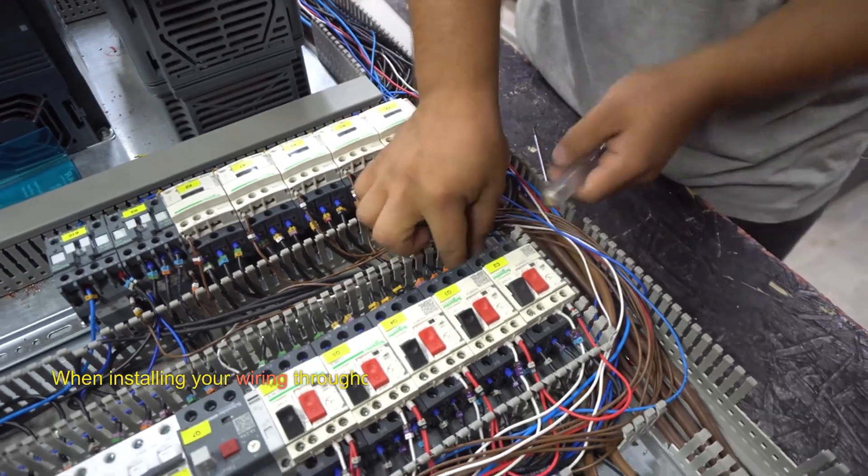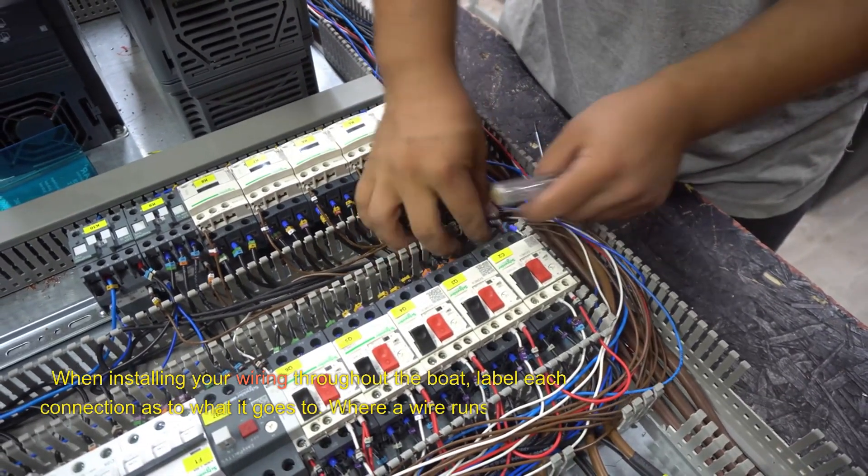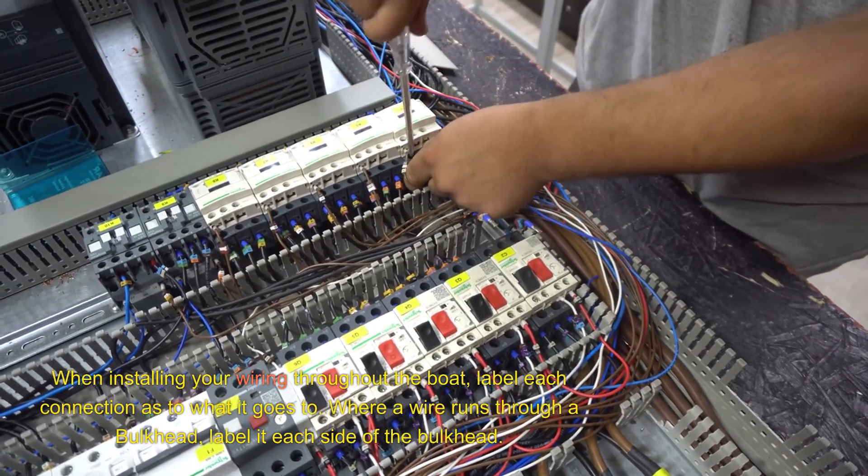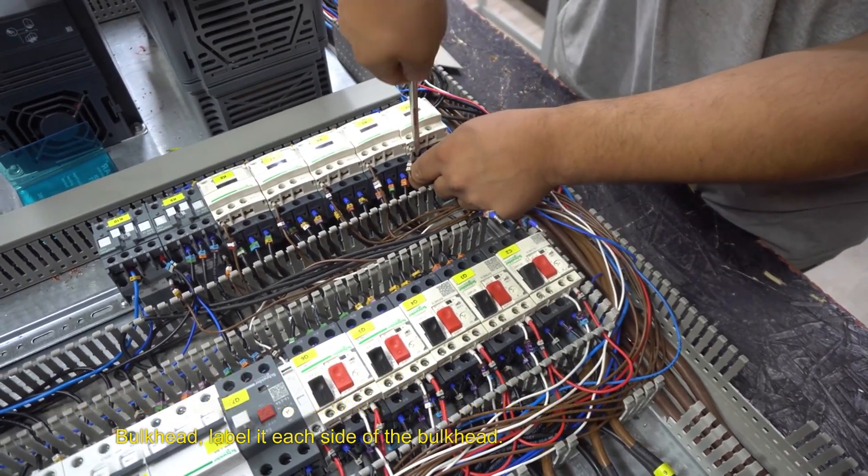When installing your wiring throughout the boat, label each connection as to what it goes to. Where a wire runs through a bulkhead, label it each side of the bulkhead.